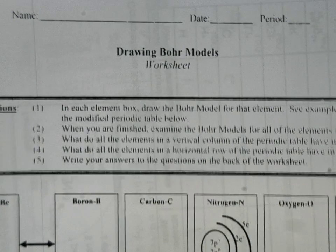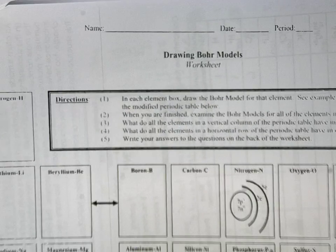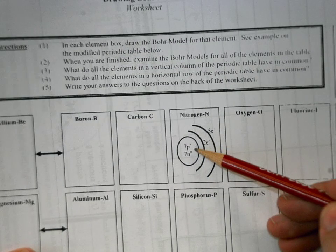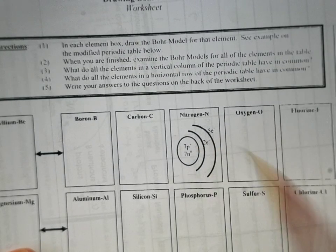So for drawing these Bohr models, let me zoom out here for you. You can take a look at this example right there. We're going to, in the nucleus, draw right out how many protons and neutrons they have.